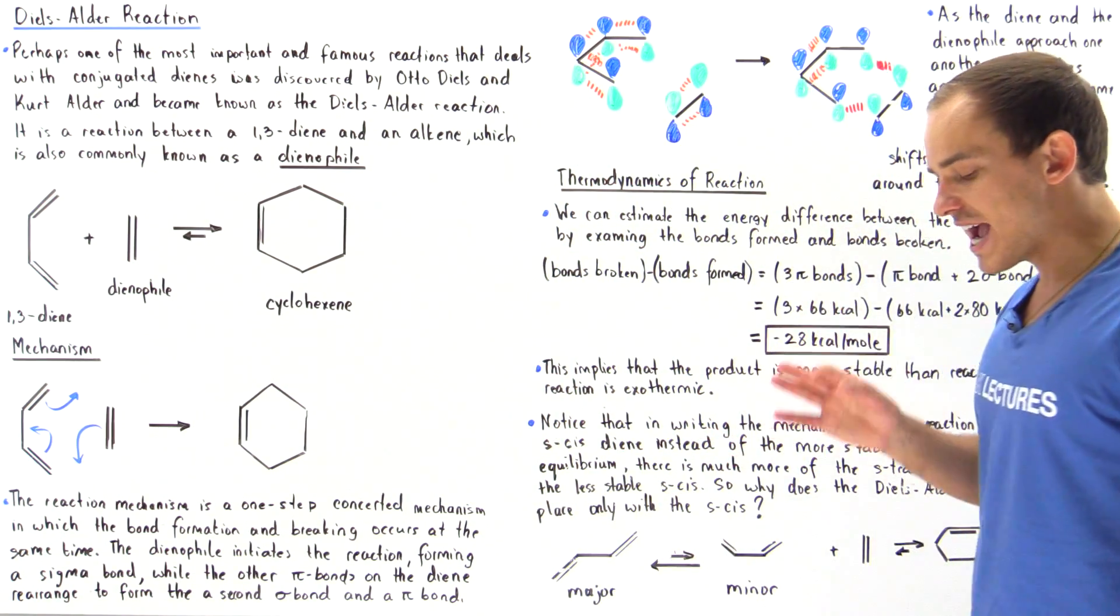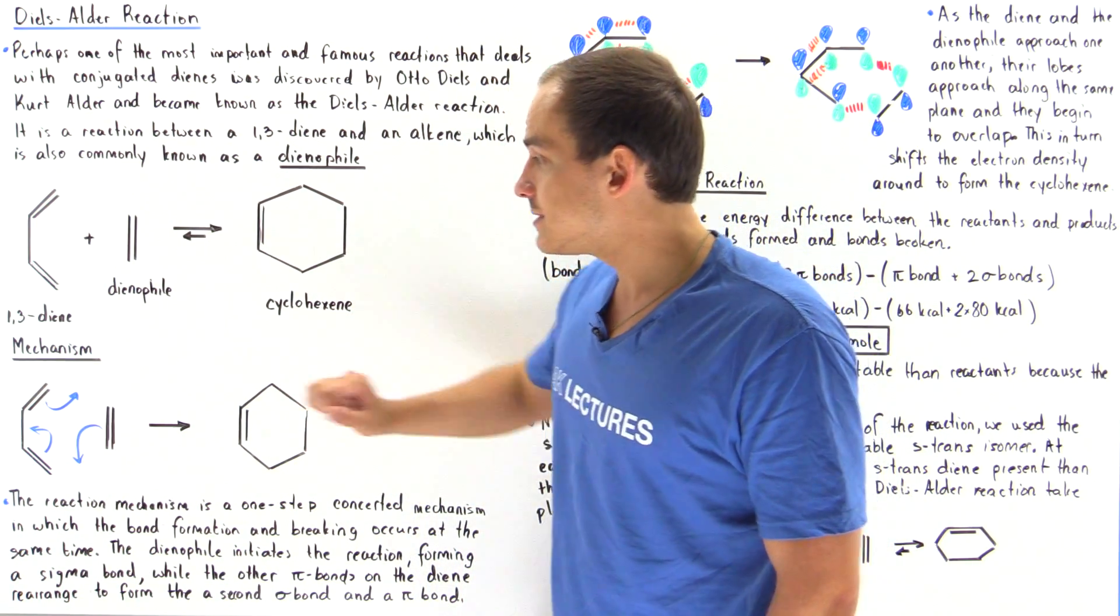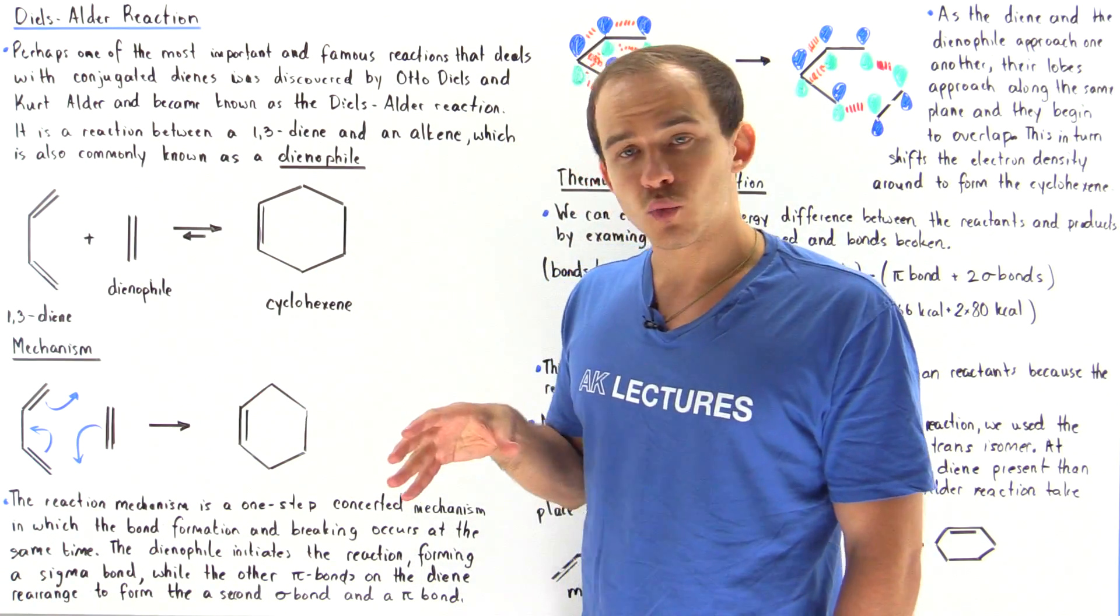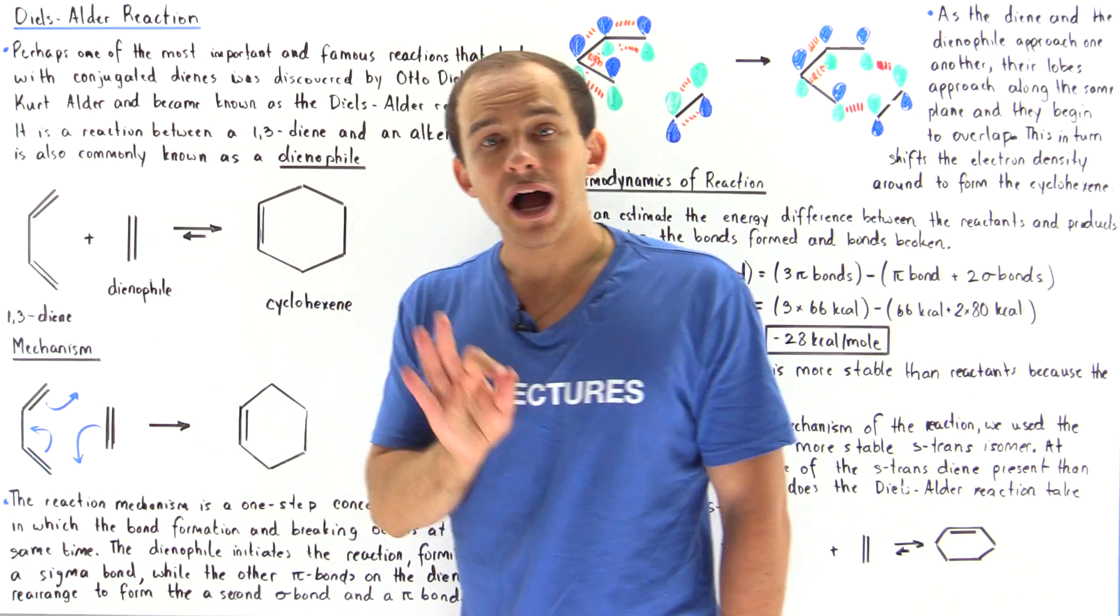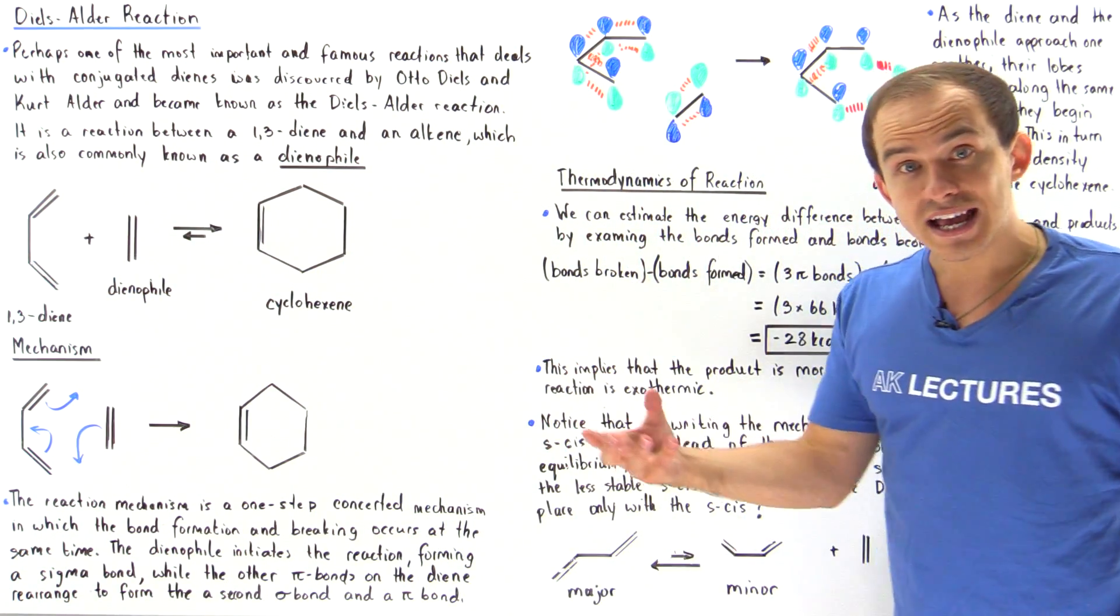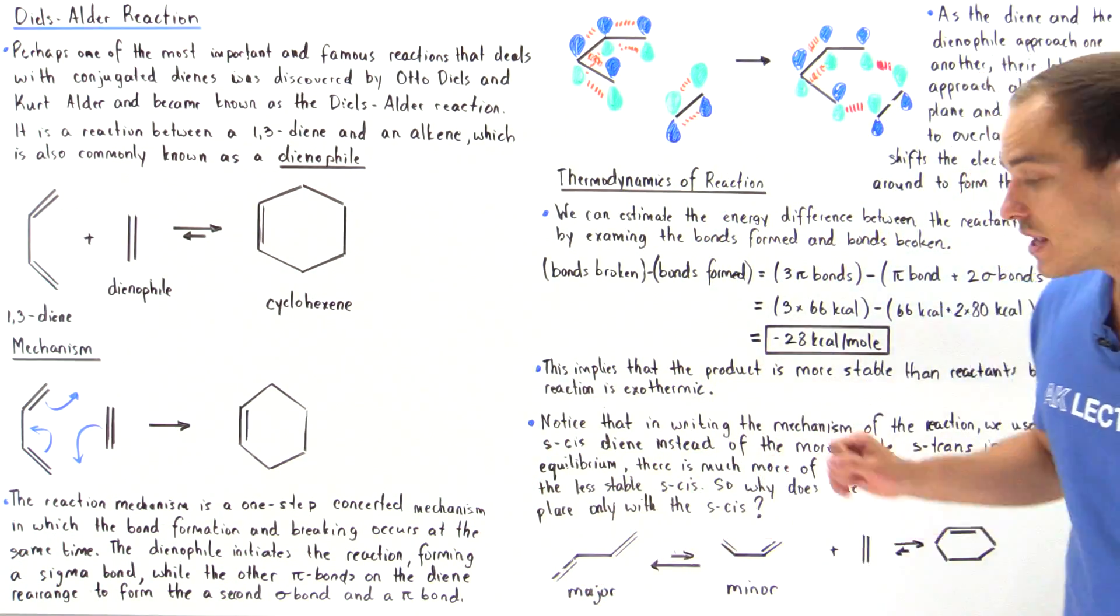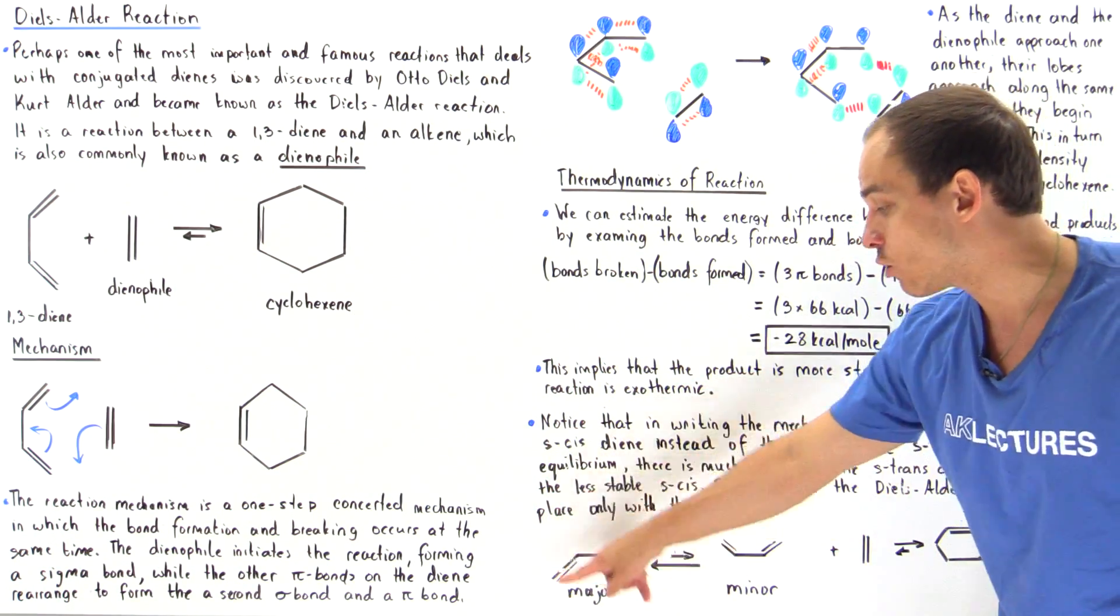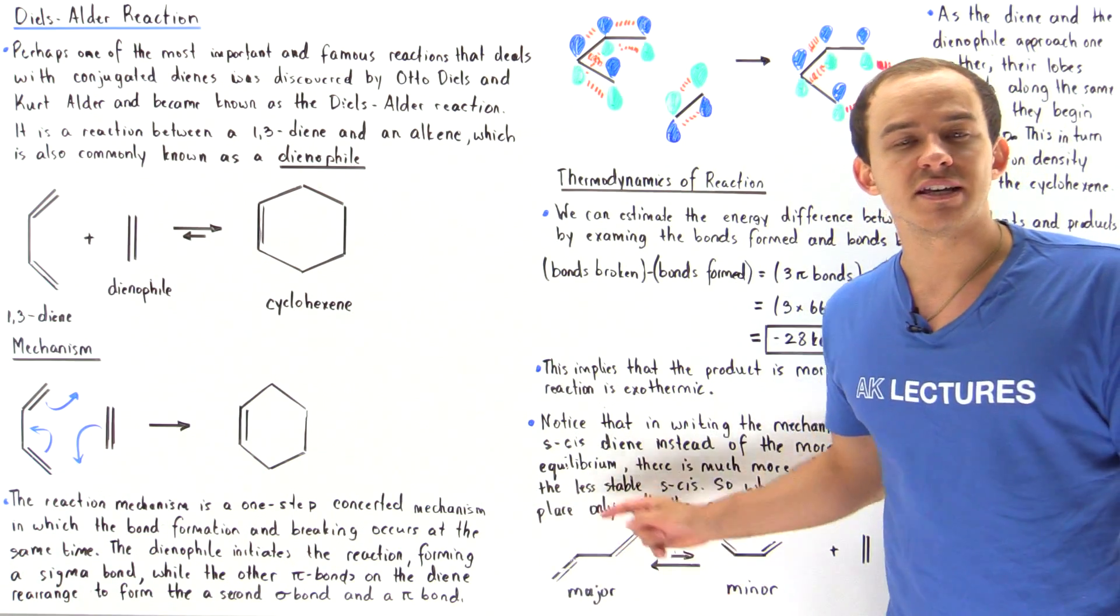Now the last part I'd like to discuss is why in this mechanism we use one type of isomer of 1,3-diene and not the other one. Notice this is in fact our s-cis isomer. So why is it that we can't use the s-trans isomer? Recall that s-trans is more stable than the s-cis isomer, and that means at equilibrium between the interconversion from our more dominant s-trans to our s-cis, this is the minor and this is the major.